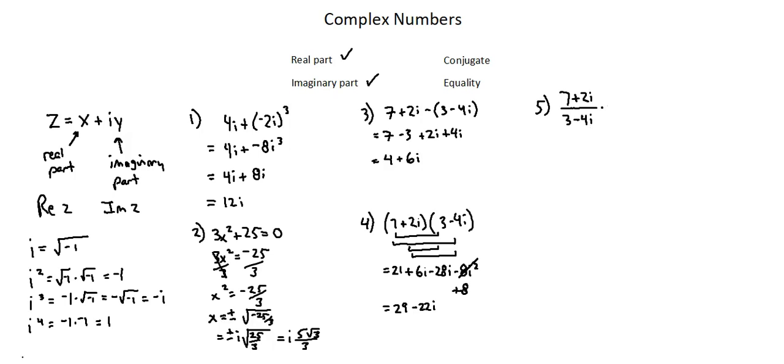The conjugate of a complex number has a matching real term and an opposite sign imaginary term. When we're dividing by a complex number, we want to multiply by a fraction with the numerator and denominator of the conjugate of the complex number in the original denominator. Our denominator is three minus four i. So the conjugate is three plus four i. That will be in the numerator and in the denominator of the fraction we're going to multiply by.